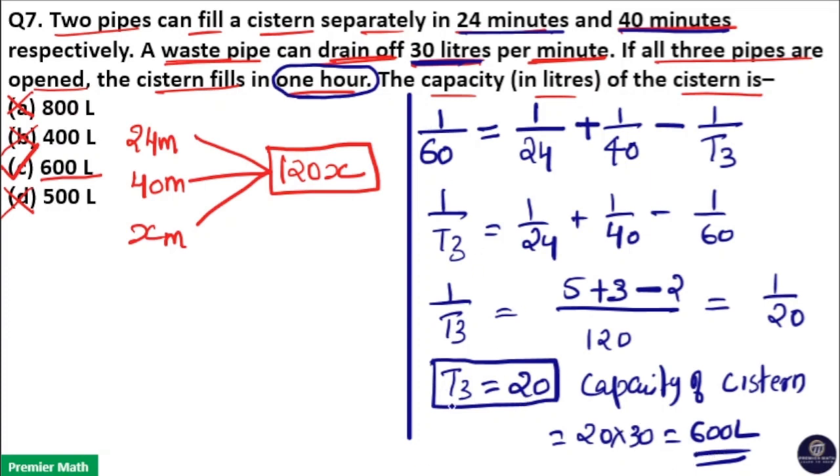Because in 20 minutes it will empty the tank. The waste pipe will empty the tank in 20 minutes. So in 20 minutes, it will drain 20 into 30, 600 liters. So option C is your answer.